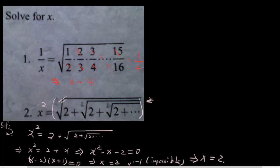That means 1 over x equals 1 over 4, which means x equals 4. Okay.